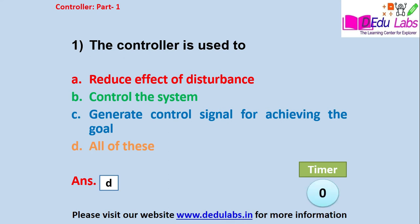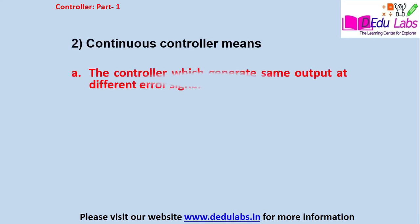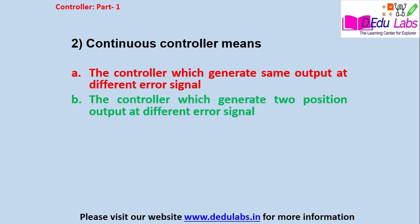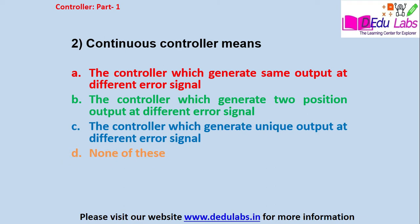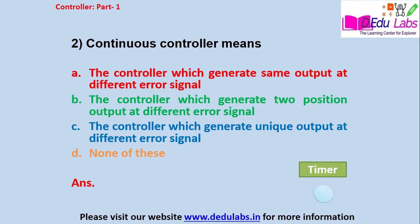Question number two: continuous controllers means — Option A: the controller generates the same output at different error signals; Option B: the controller generates two position output at different error signals; Option C: the controller generates a unique output at different error signals; Option D: none of these. The answer is Option C — the controller generates a unique output at different error signals.